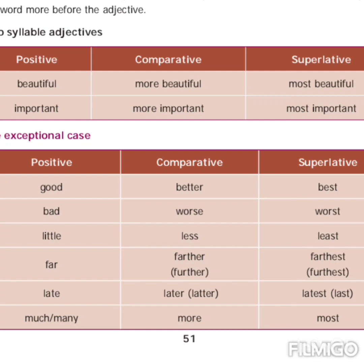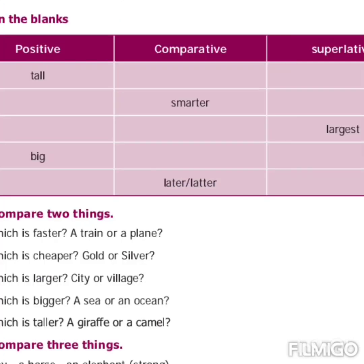Some exceptional cases exist — certain words don't follow these rules. These are irregular forms: good → better → best; bad → worse → worst; little → less → least; far → farther → farthest or further → furthest; late → later → latest or last; much/many → more → most.